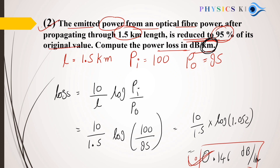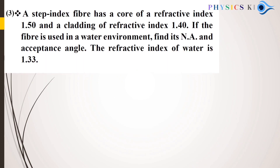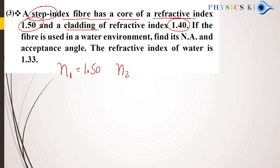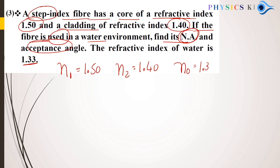Third numerical: a step index fiber has a core refractive index n1 = 1.50 and cladding refractive index n2 = 1.40. The fiber is used in water, where the refractive index n0 = 1.33. Find the numerical aperture and acceptance angle.